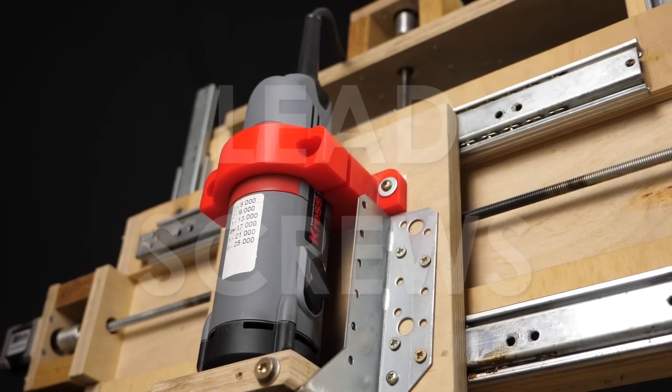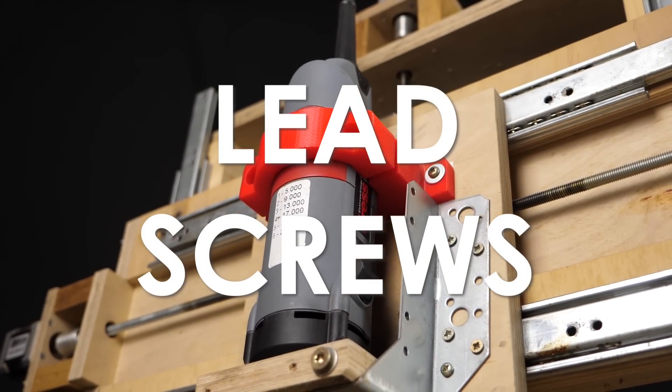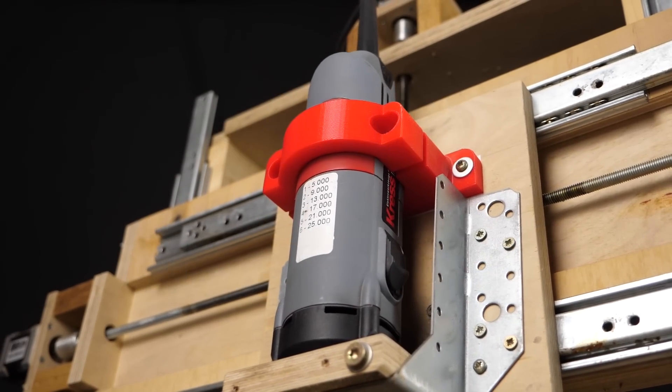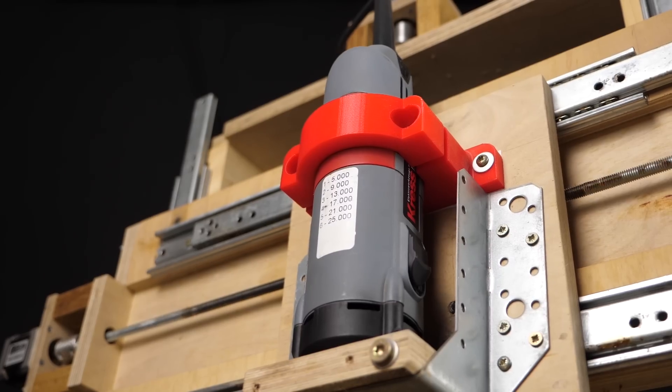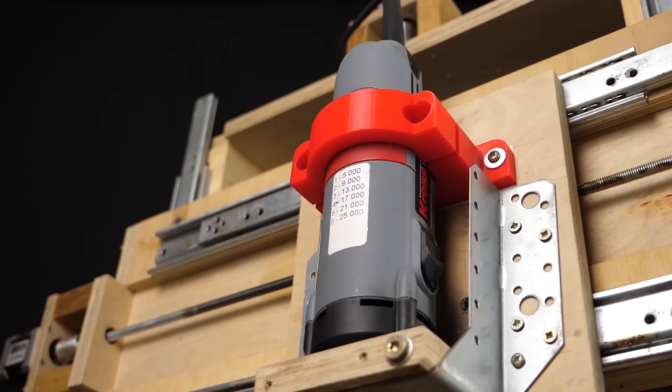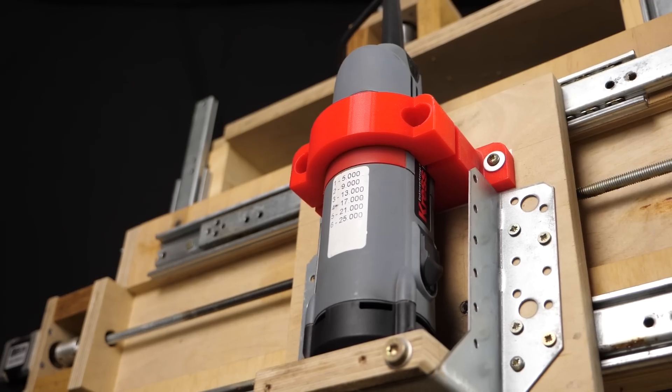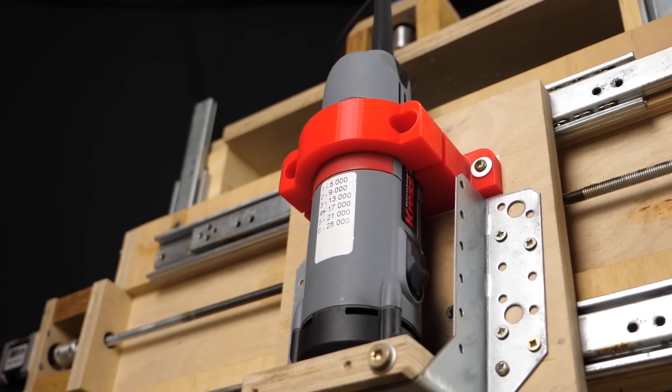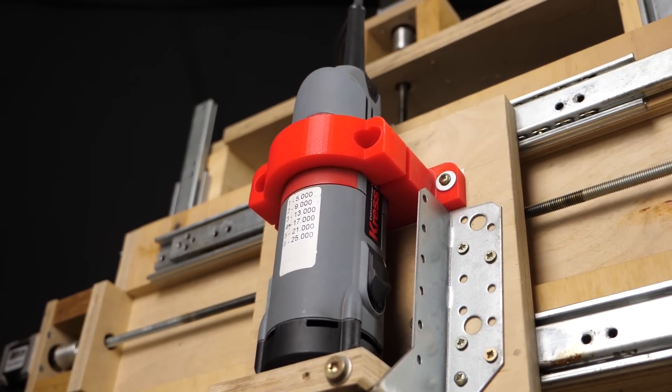The M8 threaded rods as lead screws worked okay for me and with the use of two nuts don't have too much play but trapezoidal lead screws or cheap ball screws could increase the accuracy. Only keep in mind that the pitch should be kept quite low because with a CNC router you're aiming more for force than for speed.